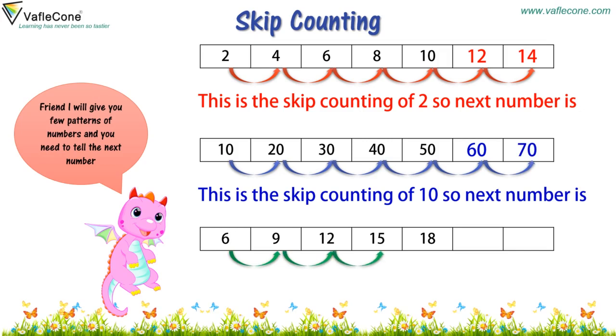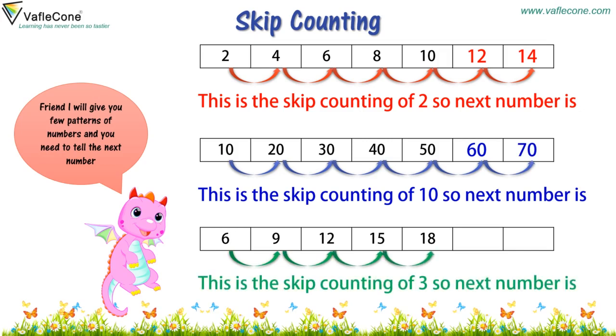6, 9, 12, 15, 18. This is the skip counting of 3. So the next number is 21, 24.